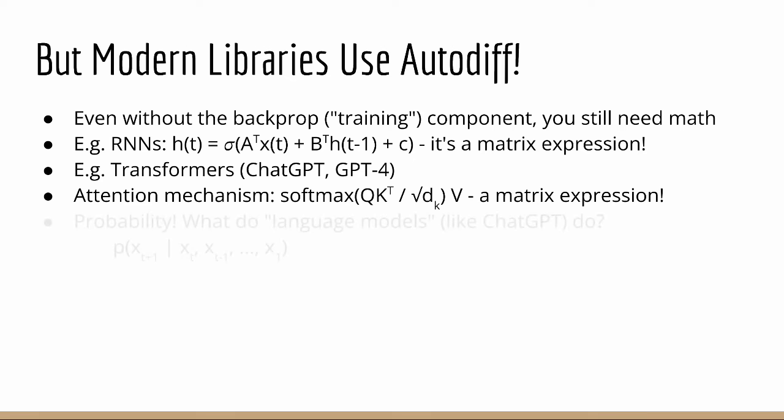Another math subject that pops up here is probability. Models like ChatGPT and GPT-4 are called language models, where essentially they involve modeling the probability of the next word in a sequence given the previous words in that sequence.